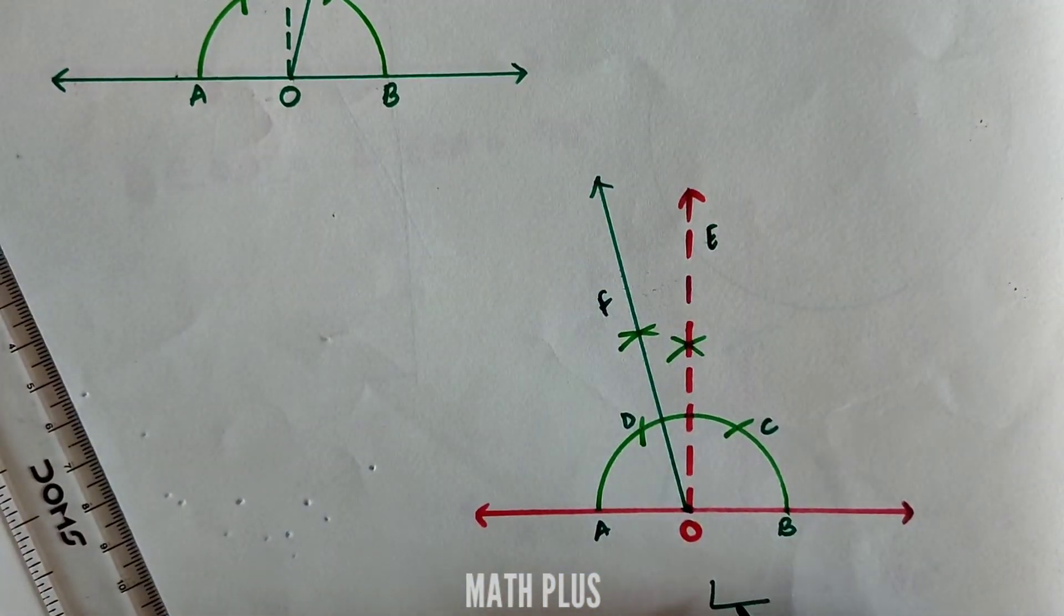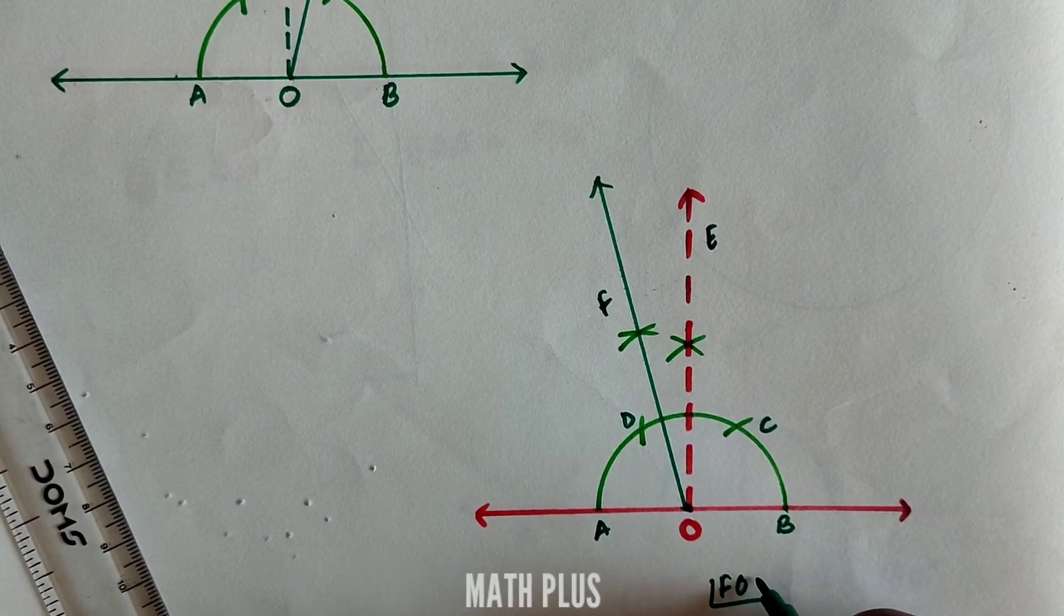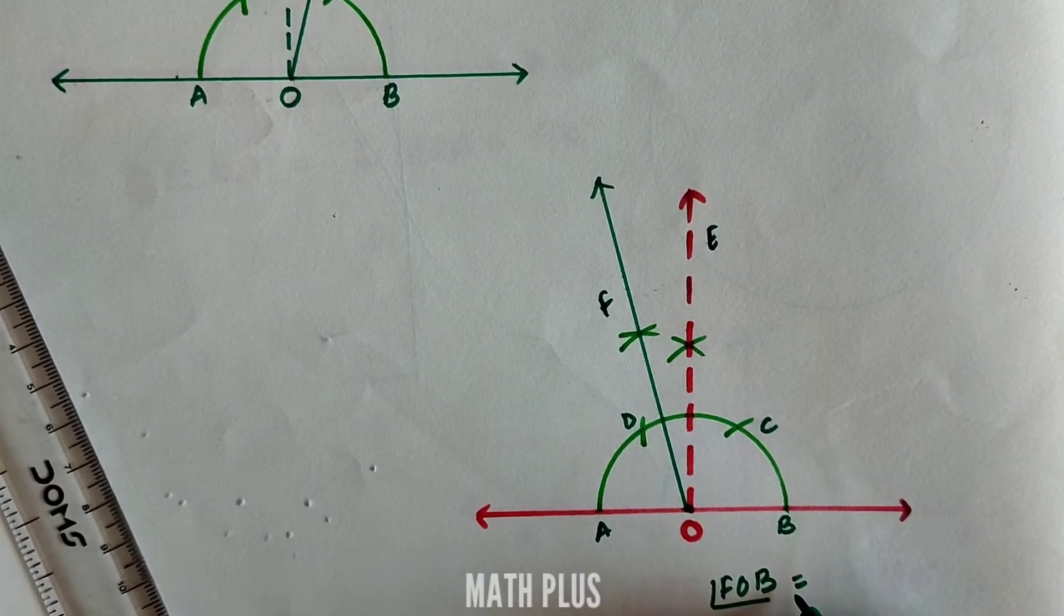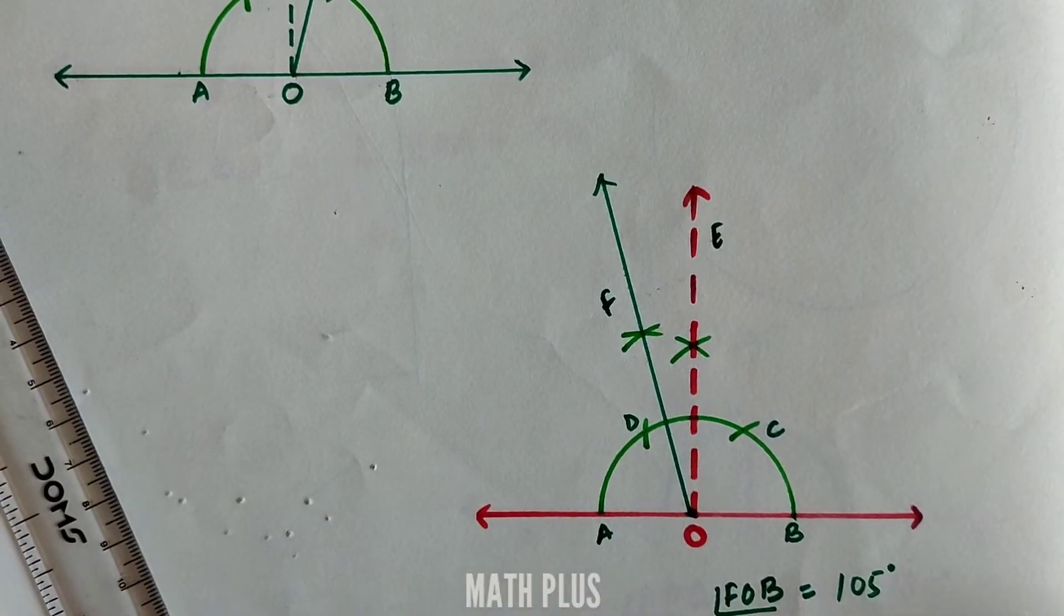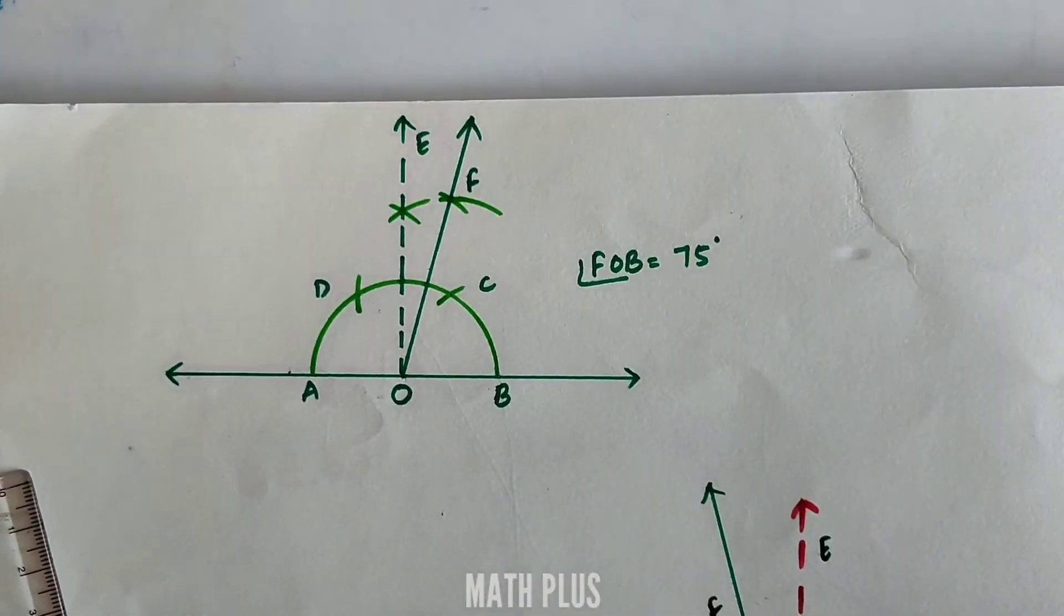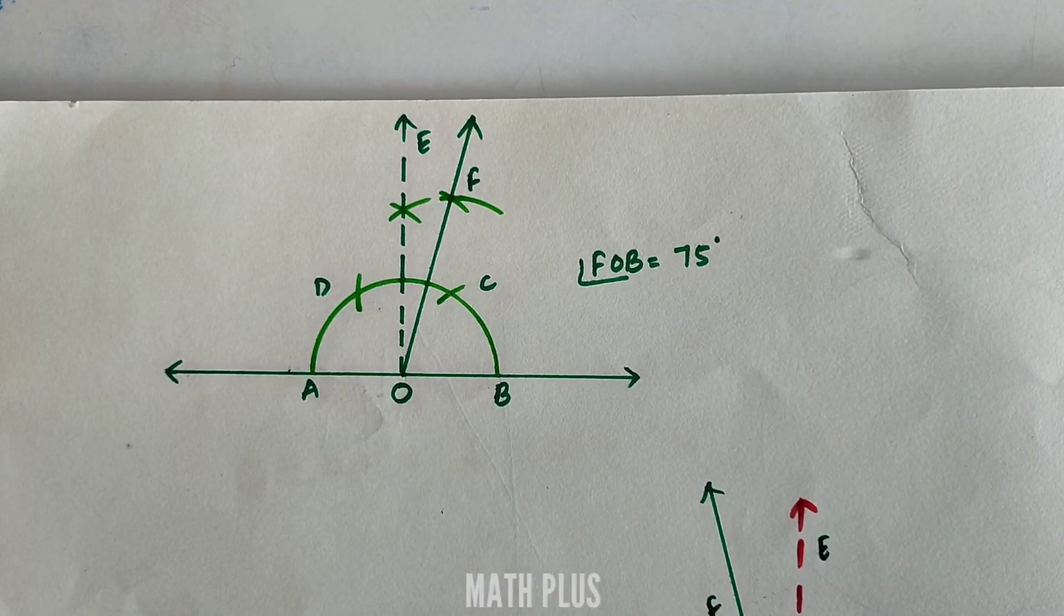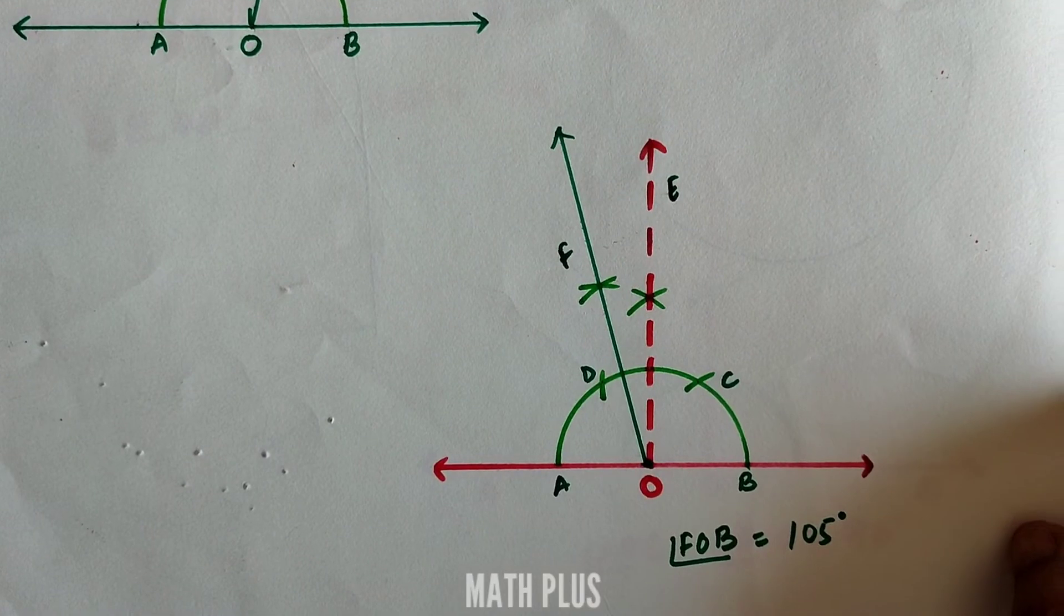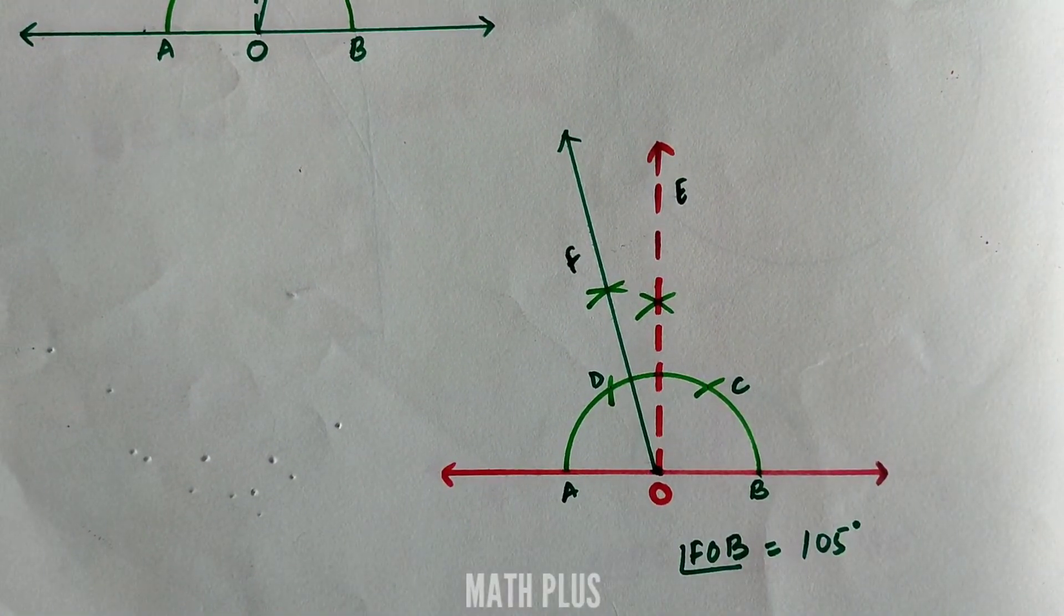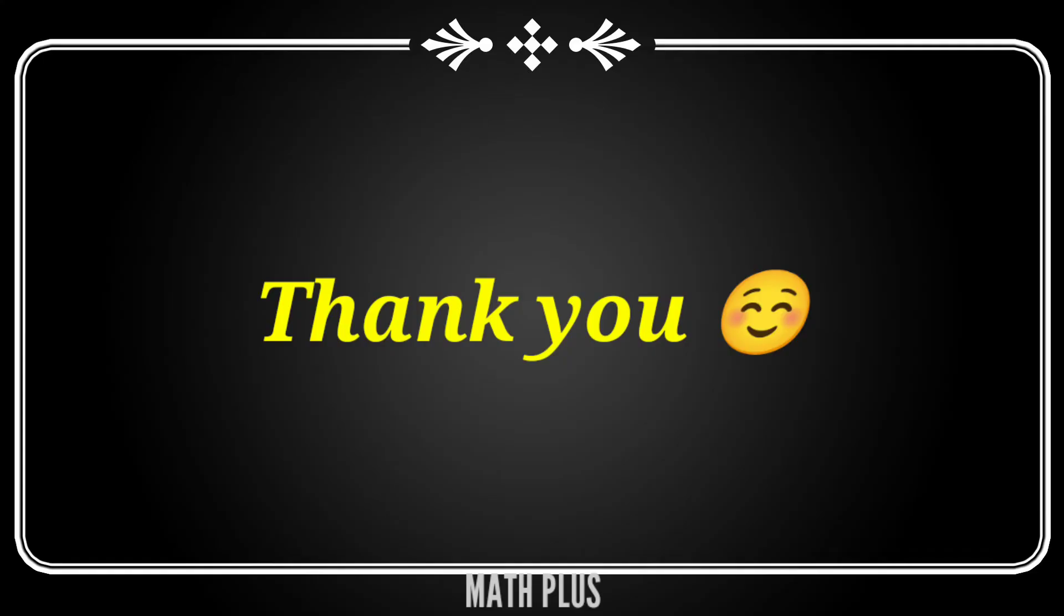Now angle FOB or BOF is equal to 105 degrees. Try these two angles, 75 and 105, and let me know in the comment section if there is any issue or problem faced by constructing the angles. Thank you for watching the video. Bye bye for now.